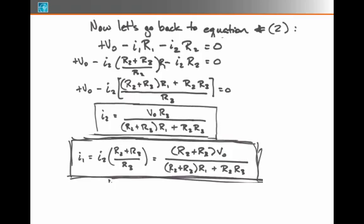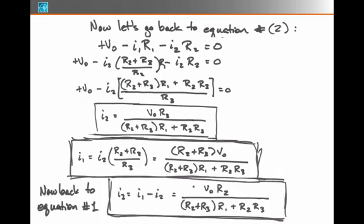Now we have I2 and I3, excuse me, I2 and I1. The only remaining current is I3, but we remember that equation 1 states I3 would be equal to I1 minus I2. If we use our equations for I1 and I2, we find that this means I3 equals V0 R2 over R2 plus R3 times R1 plus R2 R3.